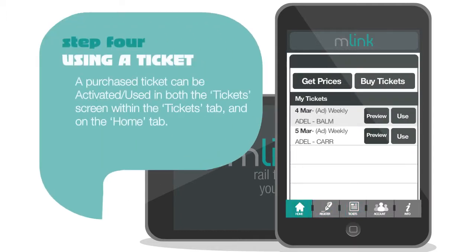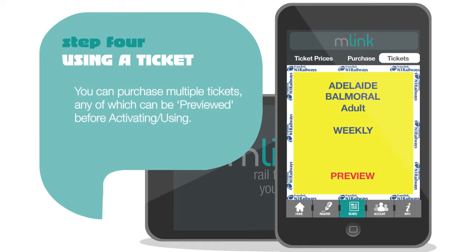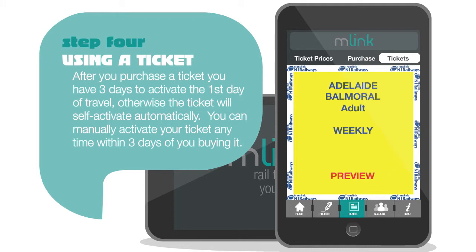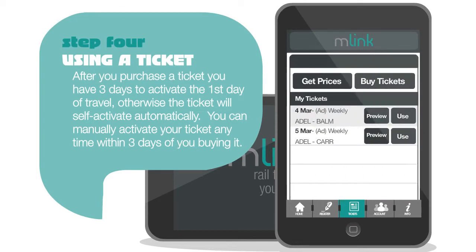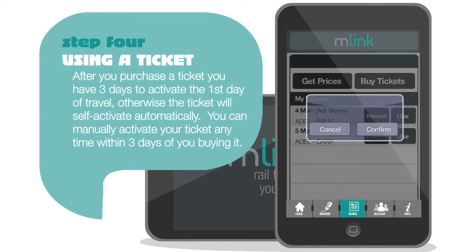Step 4: Using a ticket. A purchased ticket can be activated or used in both the Tickets screen within the Tickets tab, and on the Home tab. You can purchase multiple tickets, any of which can be previewed before activating or using. After you purchase a ticket, you have three days to activate the first day of travel, otherwise the ticket will self-activate automatically. You can manually activate your ticket any time within three days of you buying it.